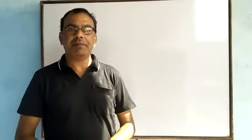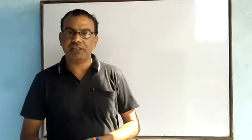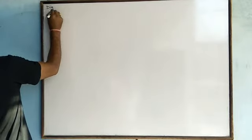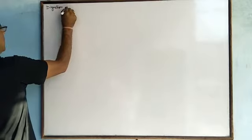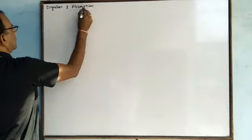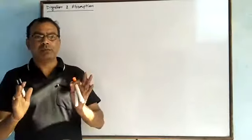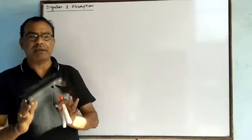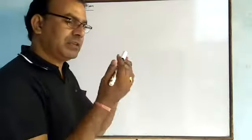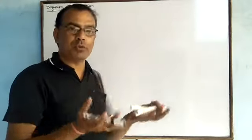Hello students, in this part we will study about human physiology, the first chapter: digestion and absorption. Digestion, as we know, food is the only source by which any organism gains energy. It is the source of energy. The food which is eaten by the organism helps in the growth of the body.